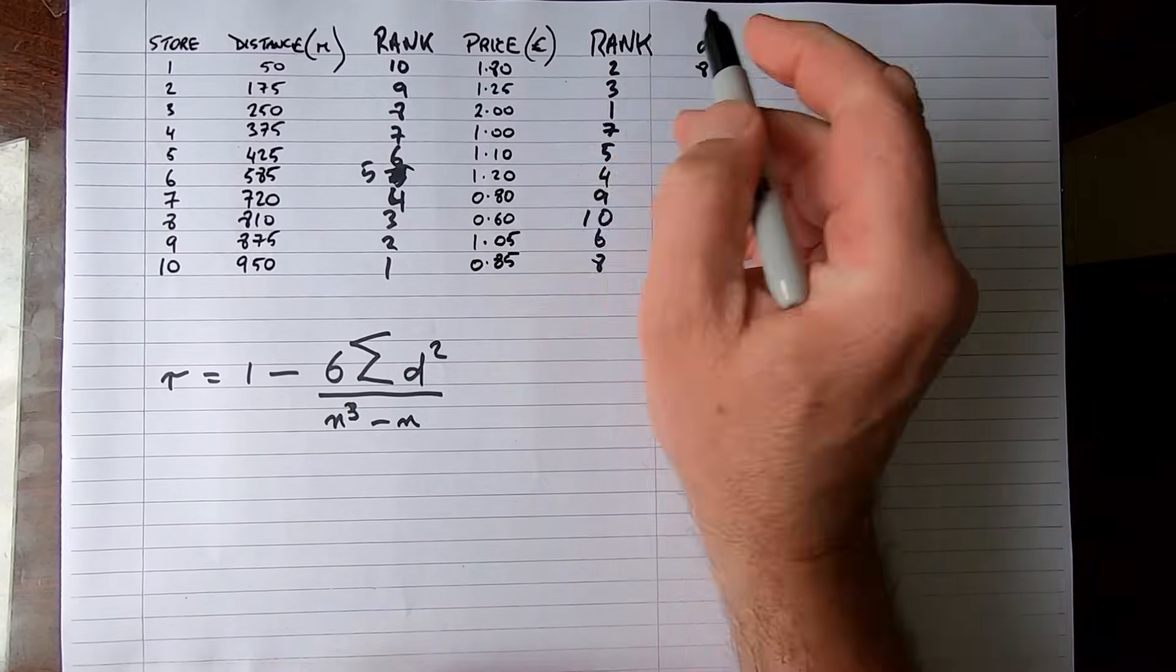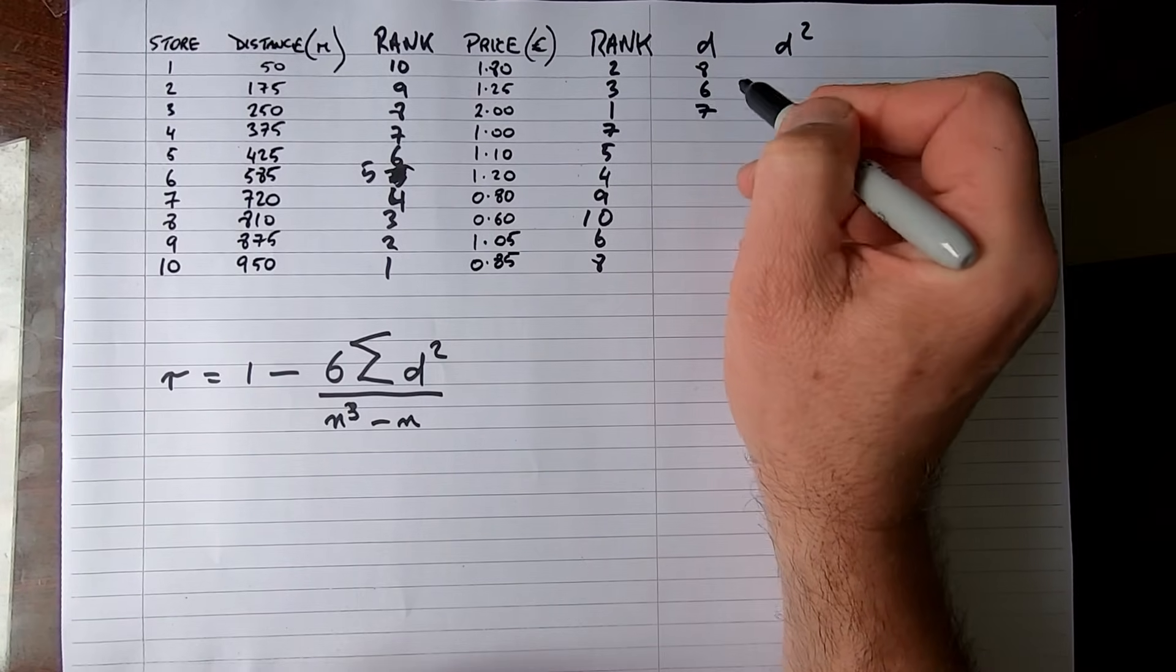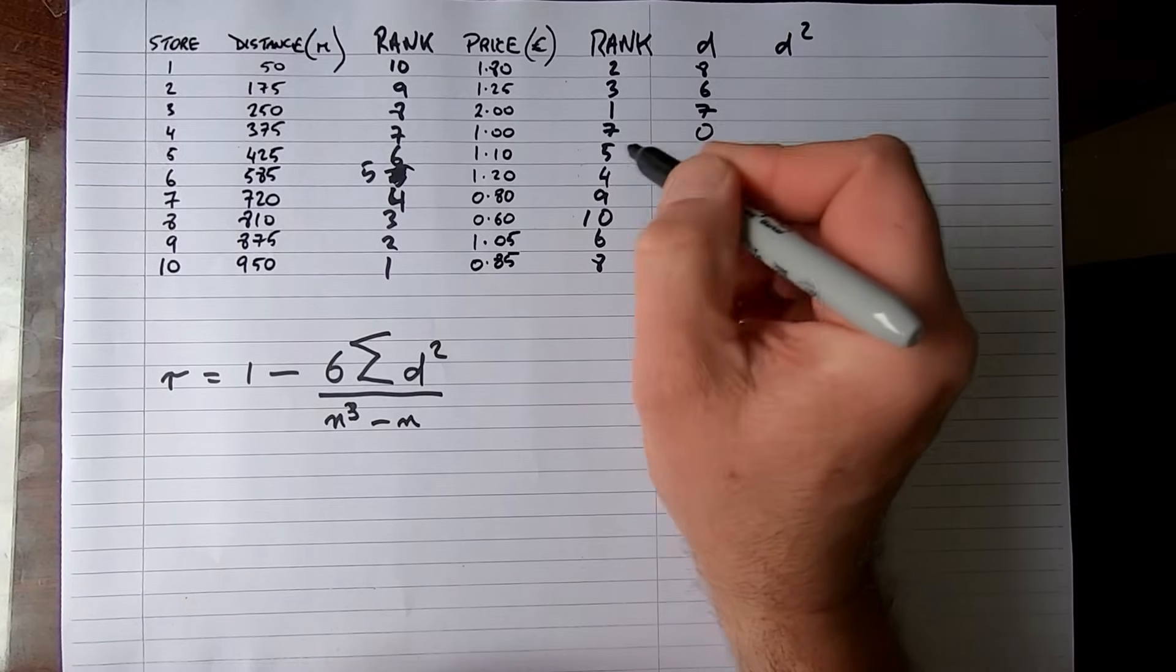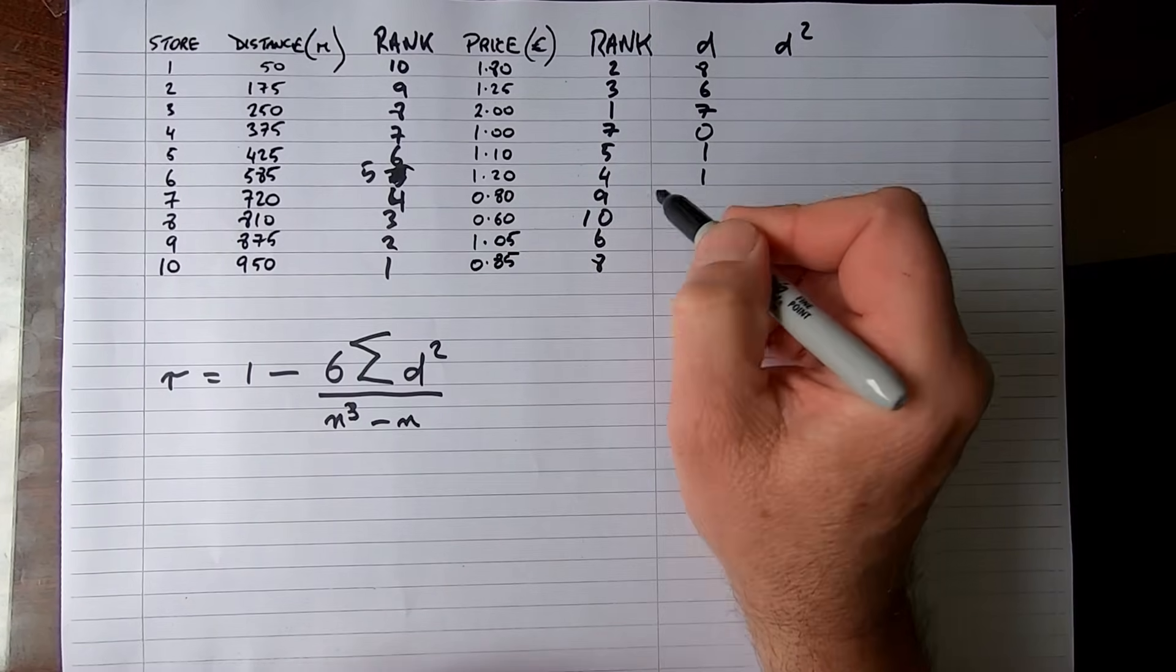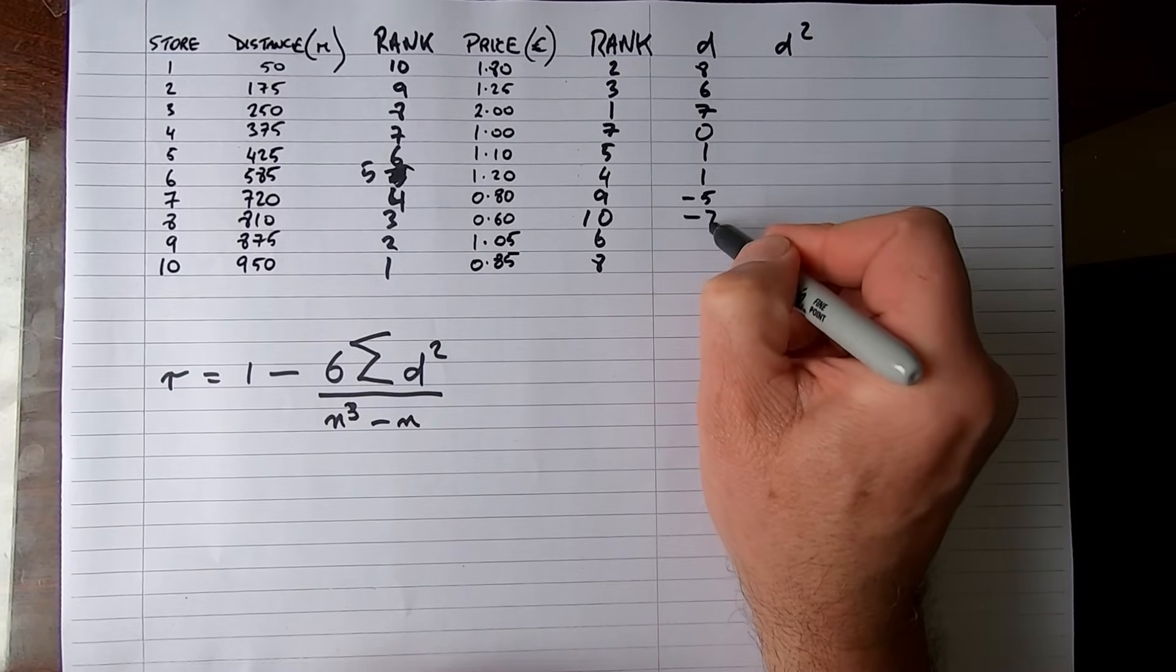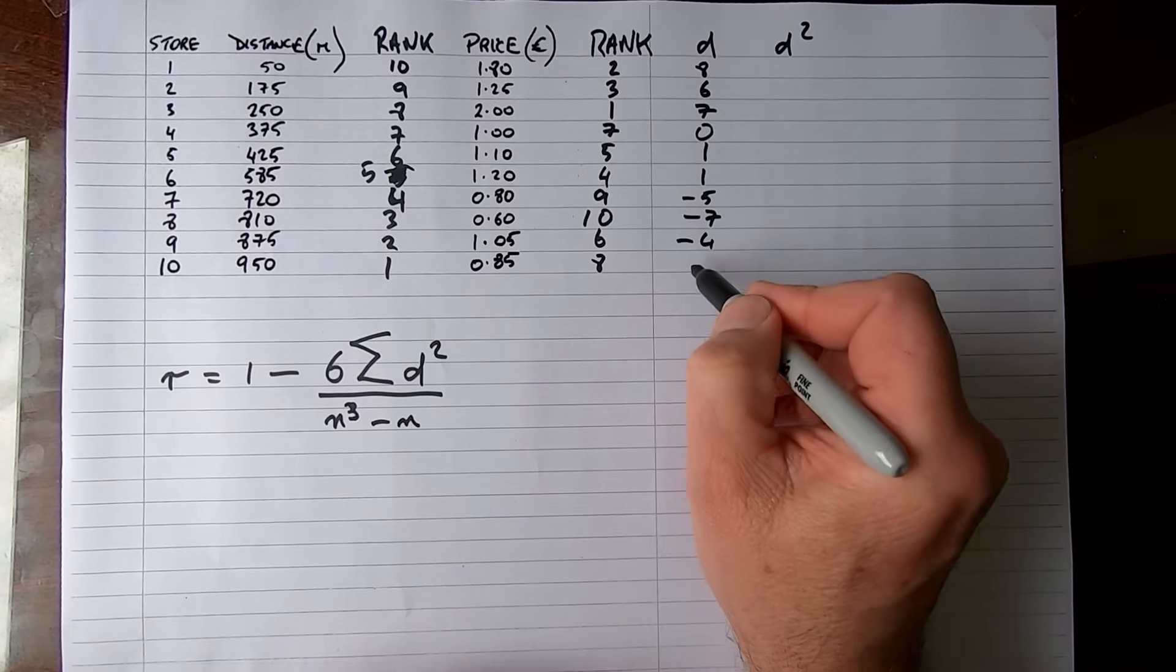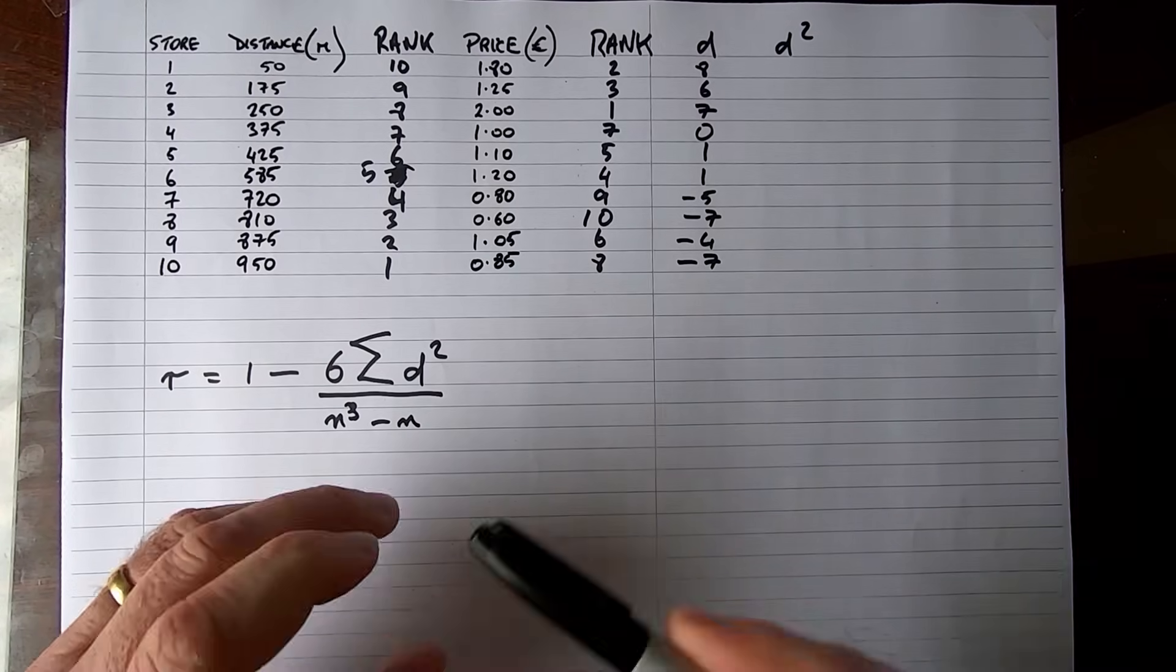Here we have 7 minus 7, which is 0. 6 minus 5, which is 1. 5 minus 4, which is 1. 4 minus 9, which is minus 5. 3 minus 10, which is minus 7. 2 minus 6, which is minus 4. And 1 minus 8, which is minus 7.